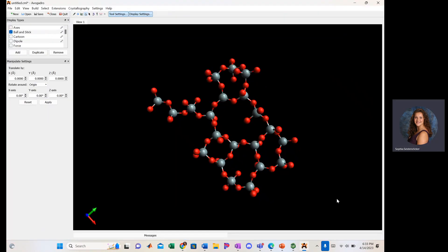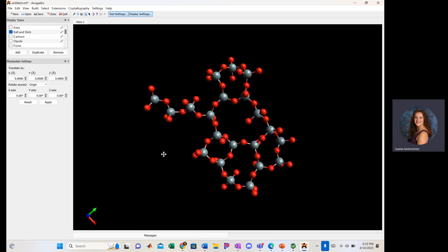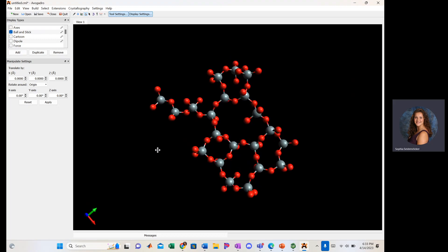Here is a 3D model of amorphous silicon dioxide. You can see that it does not have an identifiable repeating pattern and has more of a randomized shape. This model is just a section of non-crystalline silica, so not all of the oxygen atoms have complete bonding shown. The silicon atoms are in gray and the oxygen atoms are in red.